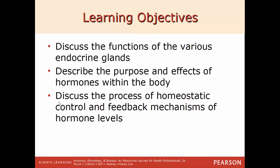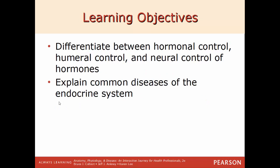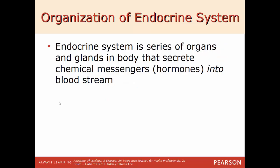Learning objectives for this chapter: discuss the functions of the various endocrine glands; describe the purpose and effects of hormones in the body; discuss the process of homeostatic control and feedback mechanisms of hormone levels; differentiate between hormonal control, humoral control, and neural control of hormones; and explain common diseases of the endocrine system.